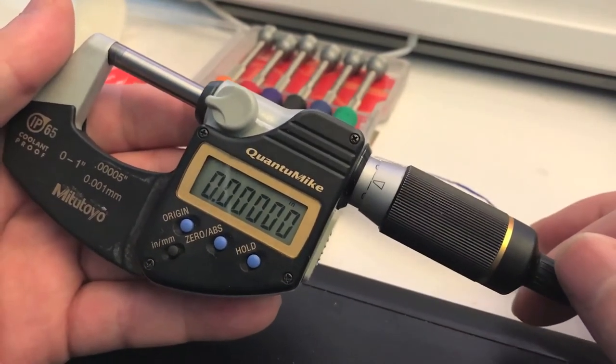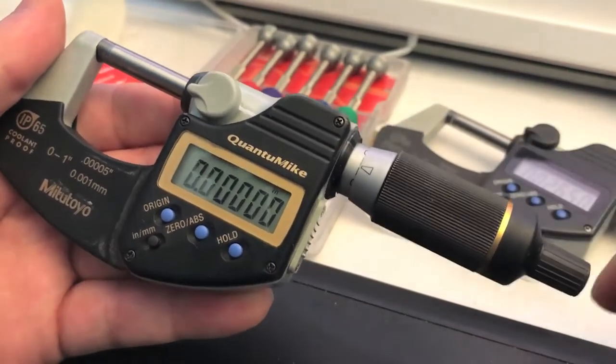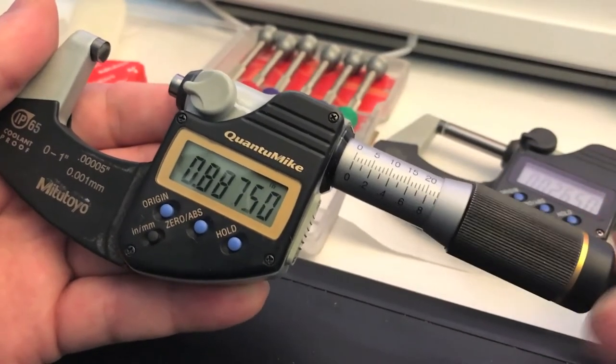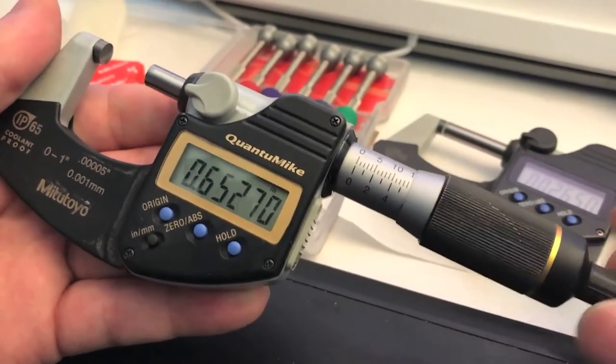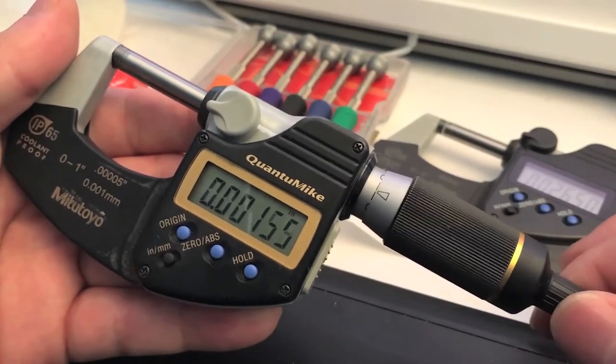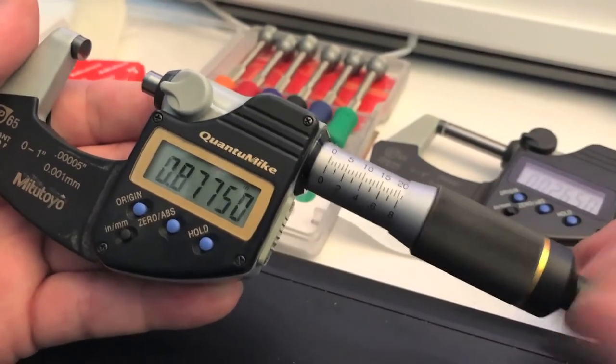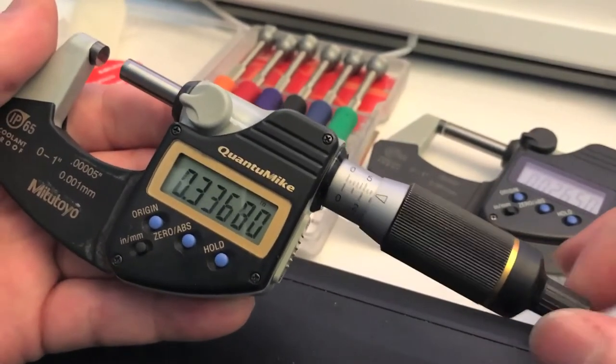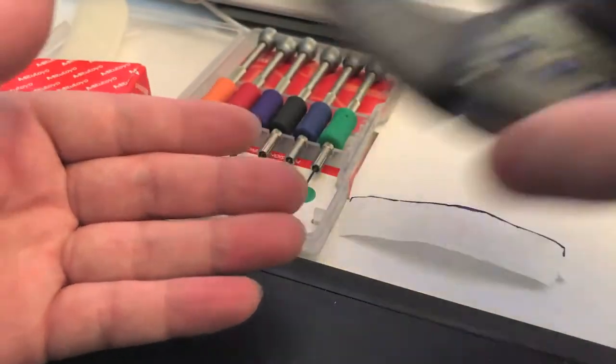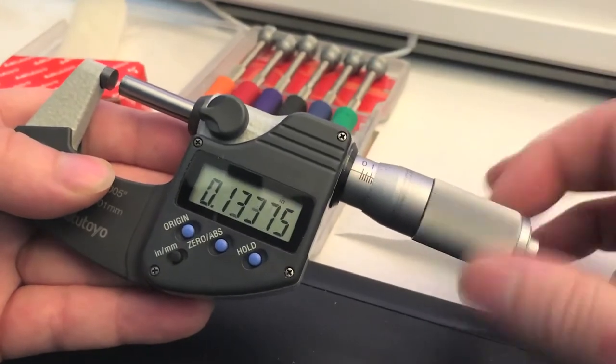So I don't really have a scientific way to do the comparison between my standard Mitutoyo micrometer and this one, other than just kind of observational speed here. Here is the basic rotational aspect of the Quantum mic. You can see it's pretty darn quick. So let me go ahead and put this down and grab my standard Mitutoyo mic and spin the spindle here. And you can see that it's much slower.